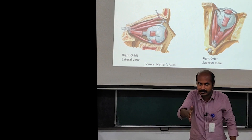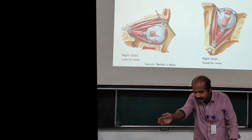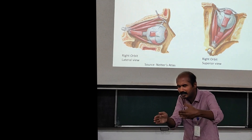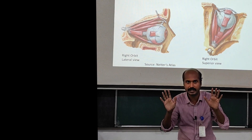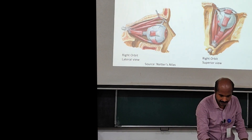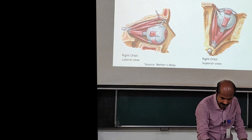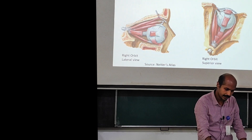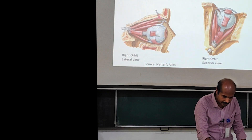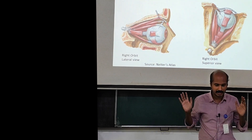It is important to understand the angular differences. The superior rectus is at 23 degrees. The superior oblique is directed roughly perpendicular to the superior rectus. You can see this clearly in the illustrations: the superior rectus goes at an angle, the levator palpebrae superioris is above it, the medial rectus and superior oblique take a turn and attach posterolaterally, the lateral rectus, inferior rectus, and inferior oblique are also visible. The levator palpebrae superioris misses the eyeball and goes toward the upper eyelid. These are beautifully illustrated in the superior view and the lateral view.